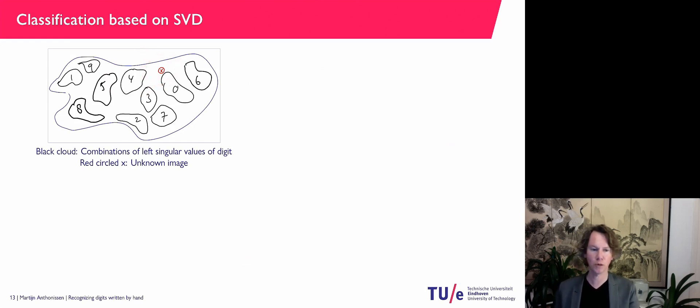And now, what I'm going to do in my unknown image, I'm going to express it as best as I can into each of these subspaces. So I'm going to project it onto each of these subspaces. And the one that is closest, that's how I'm going to label this image.